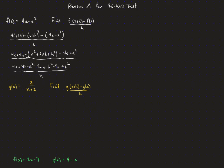Anything that doesn't have an h should find something to cancel. What remains has a common factor of h, so we'll pull that out, leaving 4, minus 2x, and minus h. That's still all over h, and we cancel that h in the denominator. Our final answer is 4 minus 2x minus h — that's our average rate of change.